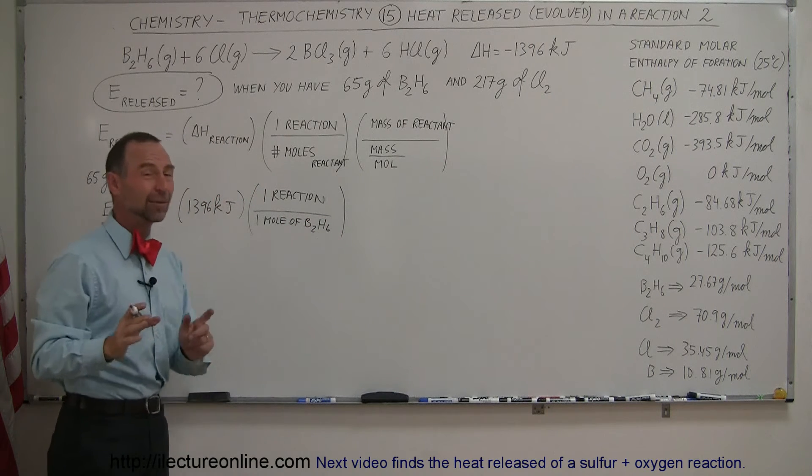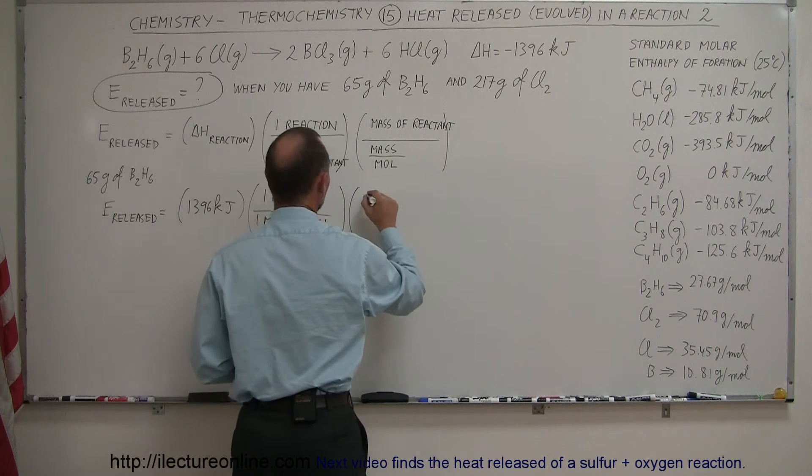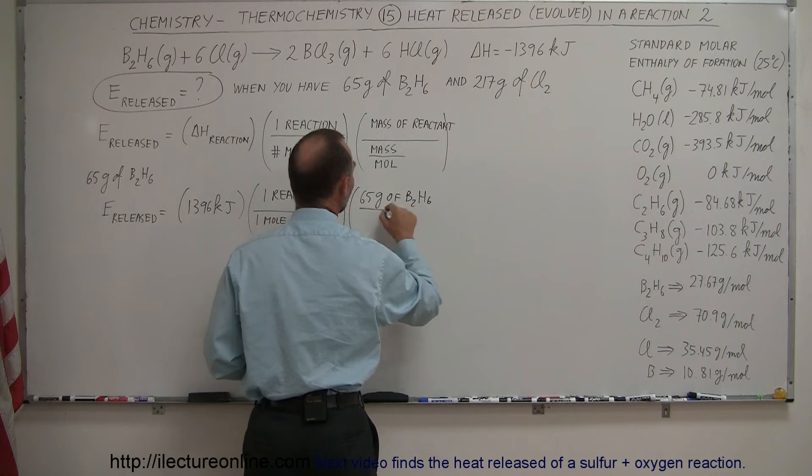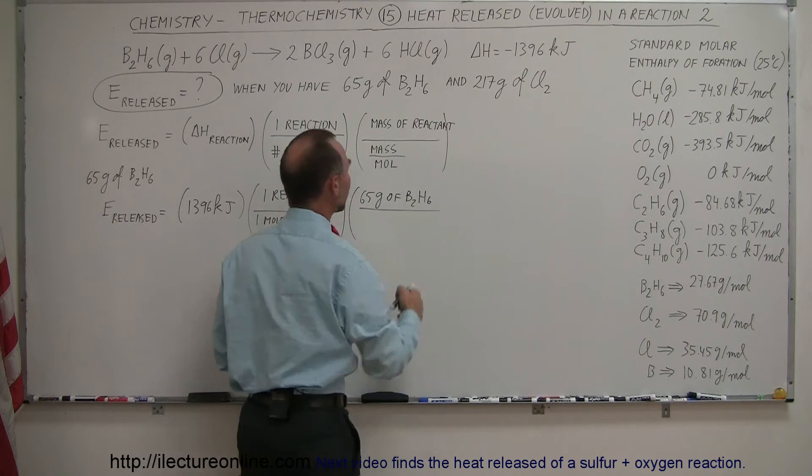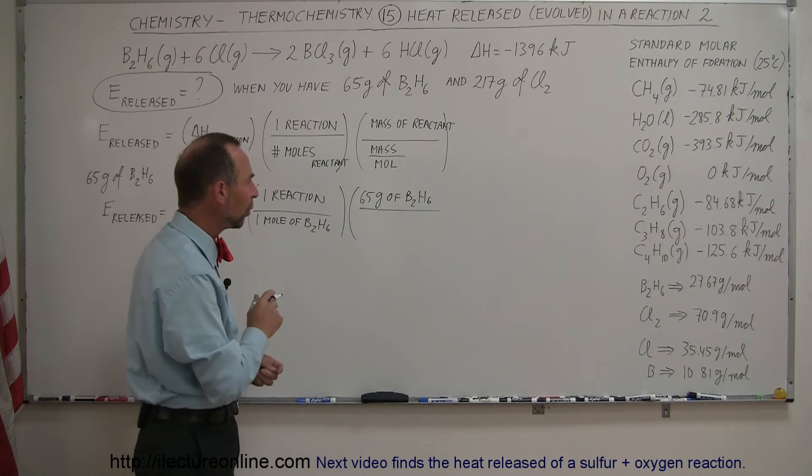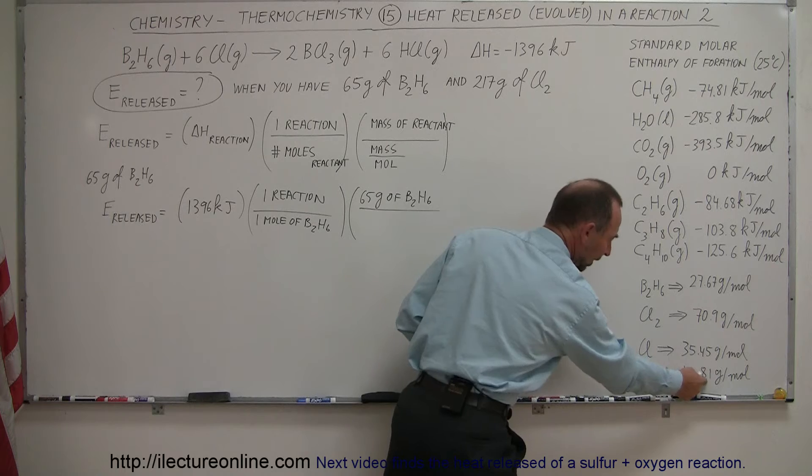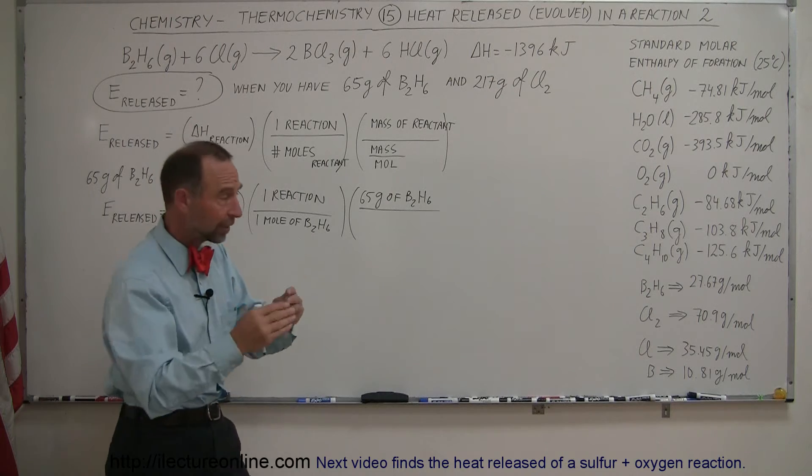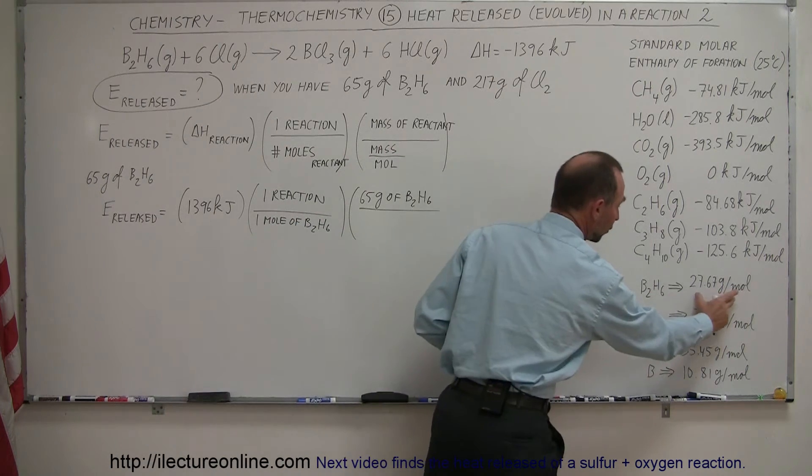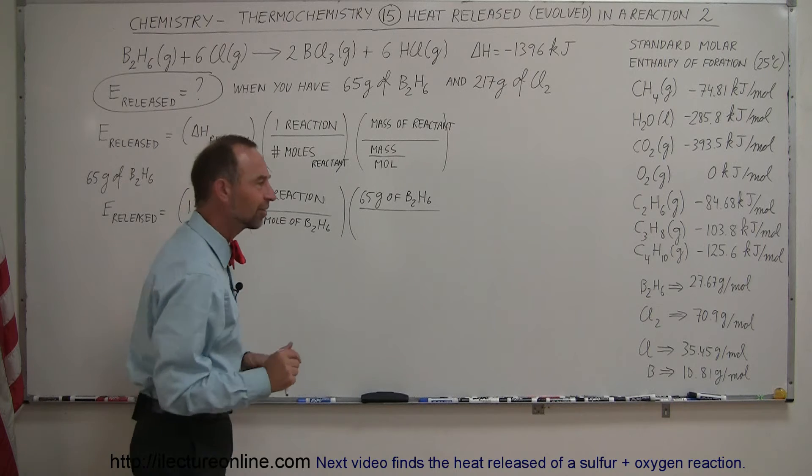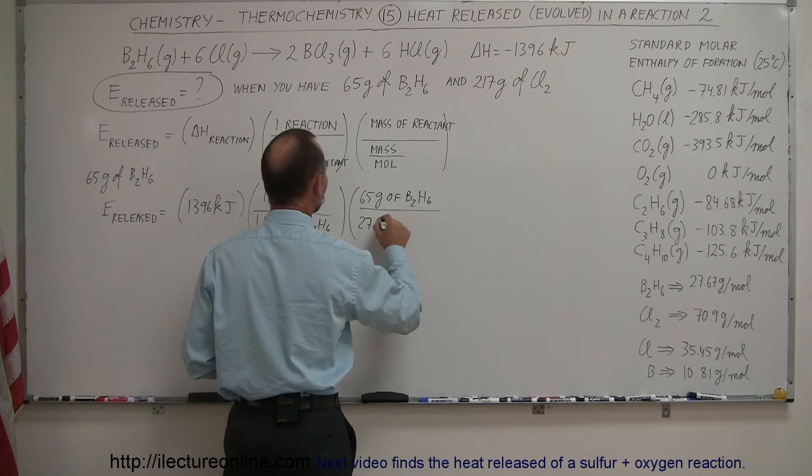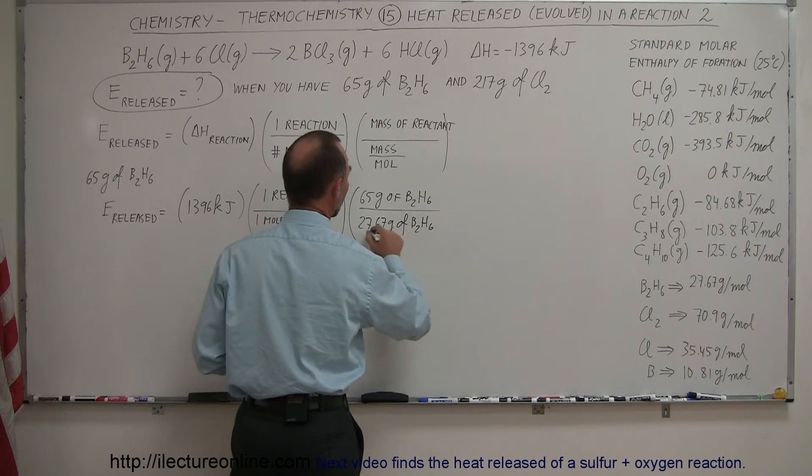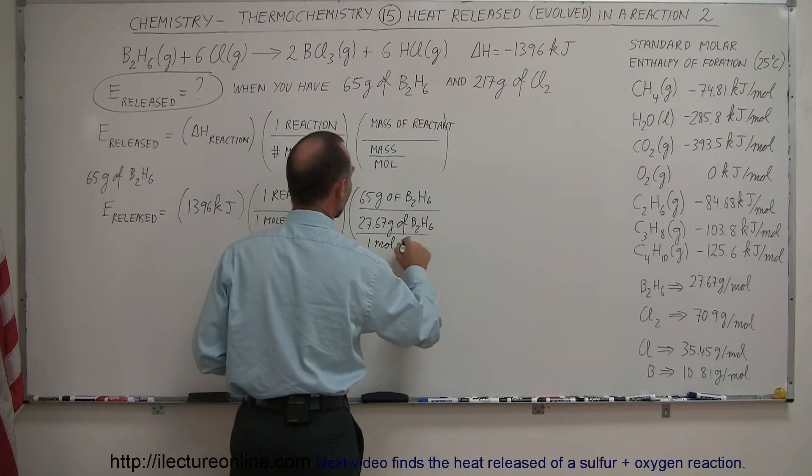Now we multiply times the mass in the sample, so we have 65 grams of diborane, and we divide that by the mass per mole of diborane. The mass of one mole of boron is 10.81 grams, we have that right there. The mass of hydrogen is 1.008 grams per mole. When we put it together into a molecule like this, the total mass per mole is 27.67 grams per mole. So 27.67 grams of diborane per one mole of diborane.